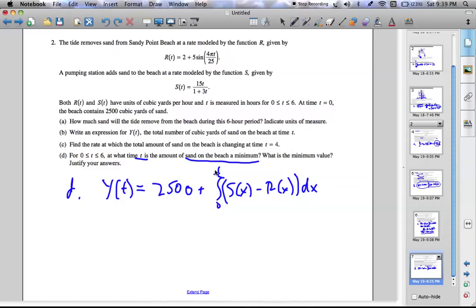y of t. So a minimum is defined when y prime, the first derivative, goes from negative to zero to positive. So at that zero, the time t would be the minimum value.